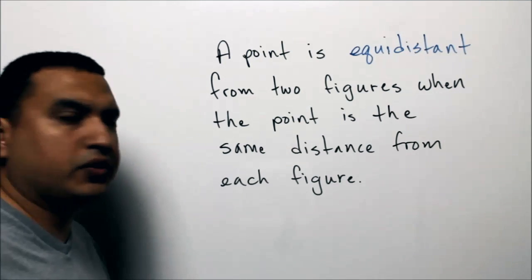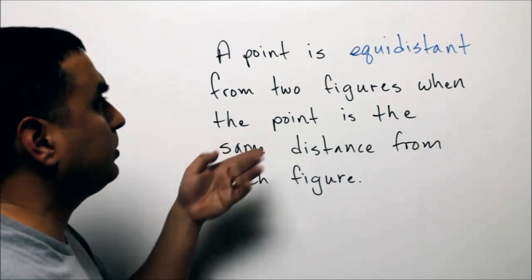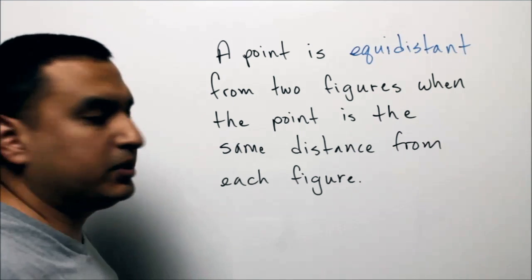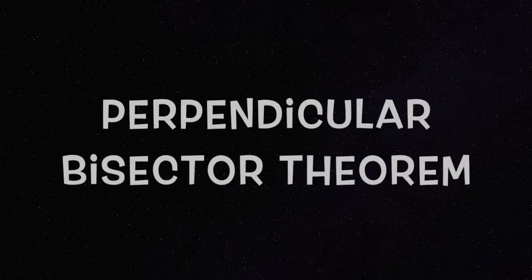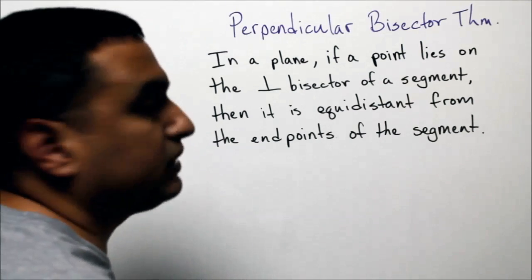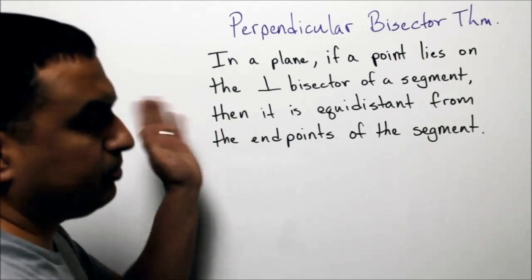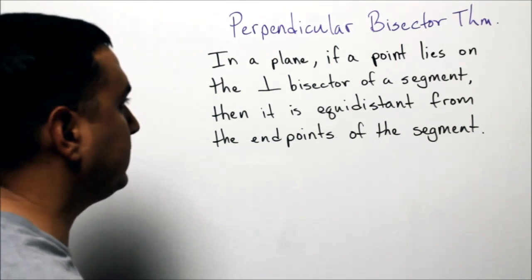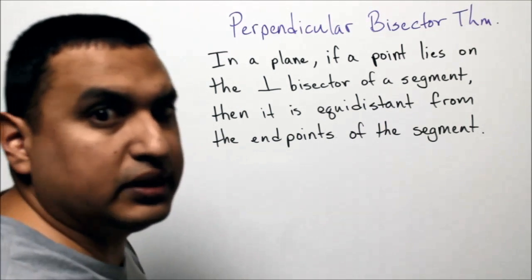The next vocabulary word is equidistant. A point is equidistant from two figures when the point is the same distance from each figure. Now, the perpendicular bisector theorem states that if you have a point on the perpendicular bisector of a segment, then it is equidistant from the endpoints of the segment.